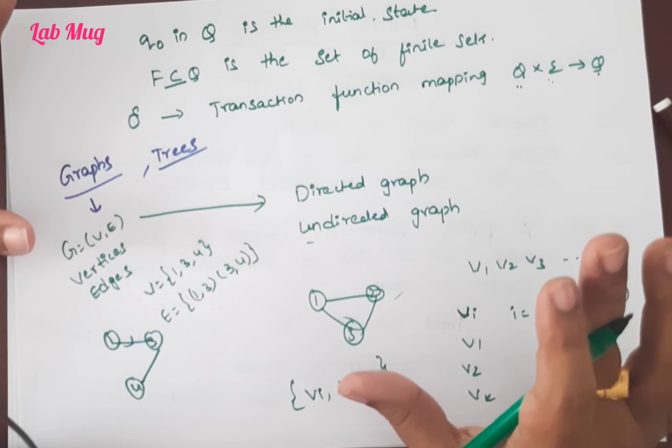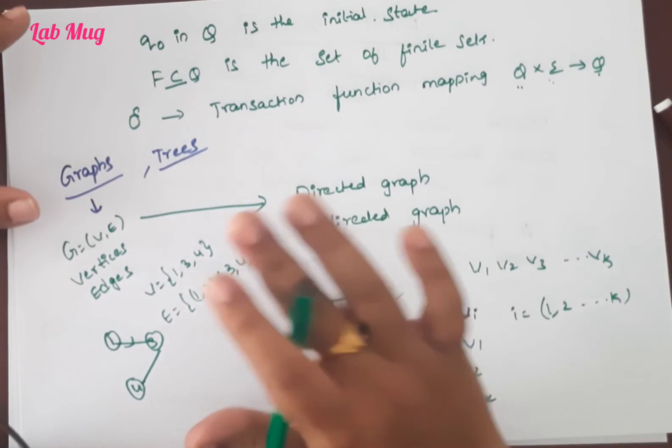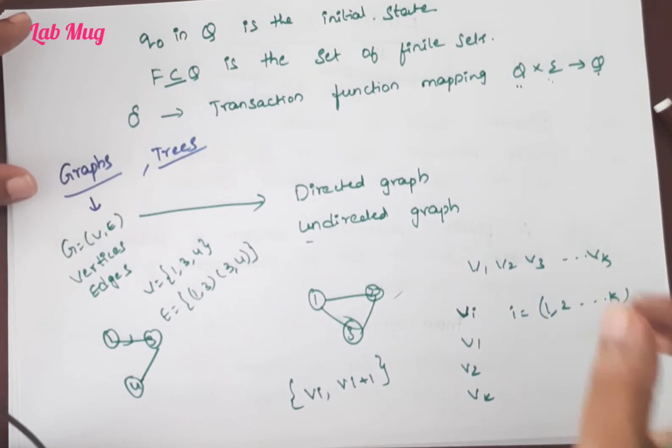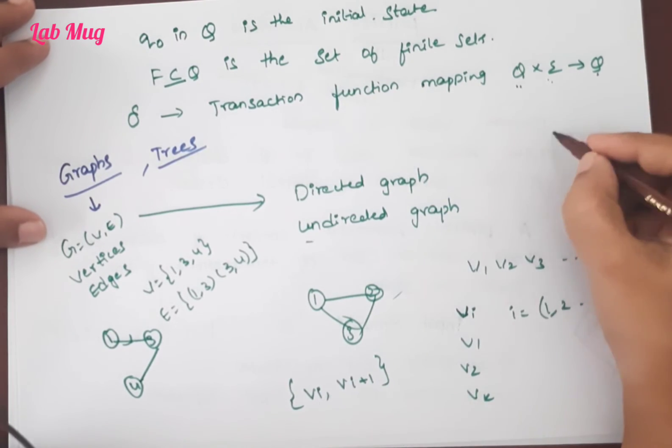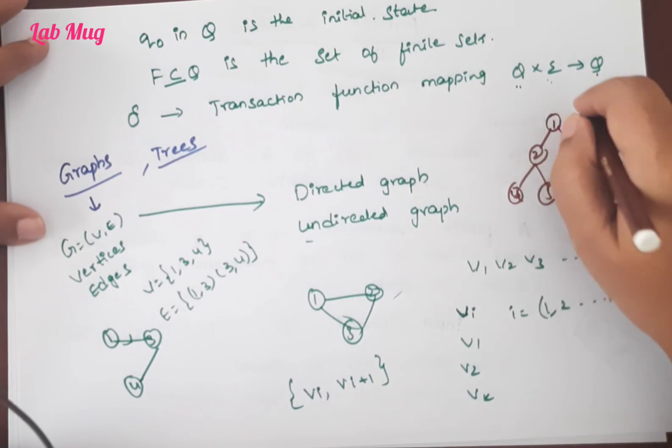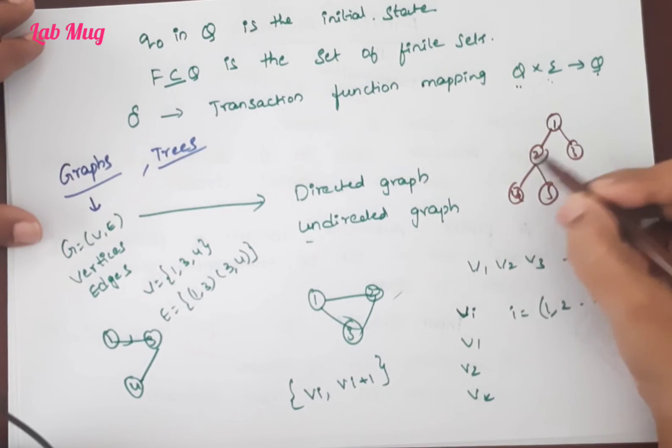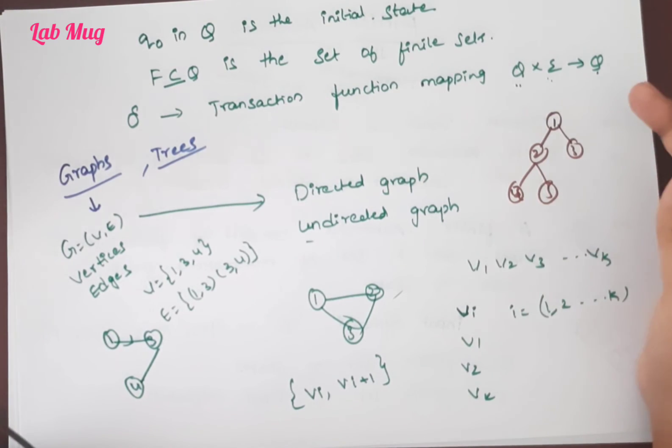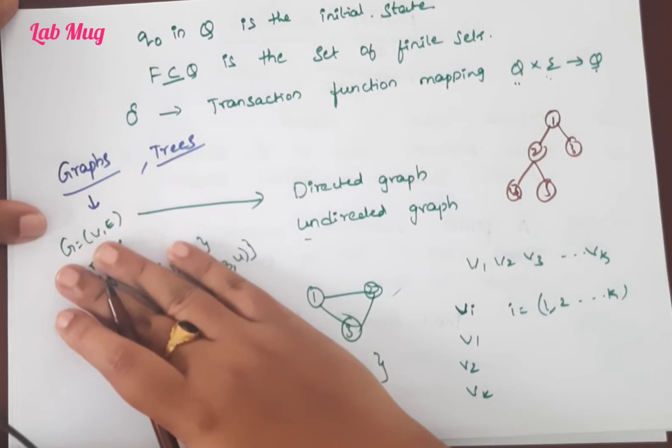For trees, a tree is generally a digraph with the following properties. Here also we take vertices and edges the same way, but here we strictly follow certain properties to call it a directed tree, which we call a digraph. Here also one vertex exists, generally we see in data structures. This is how we form a tree. From one vertex we take it as root, and its predecessors and successors as vertices. The remaining all are also root nodes and vertices. So this collection of vertices again forms a tree, and we need to use the same terminology.